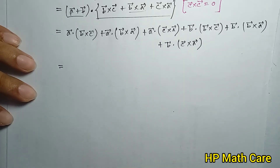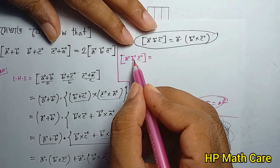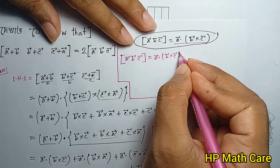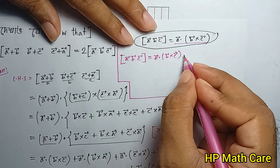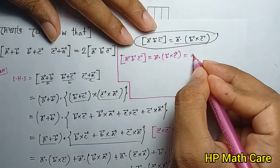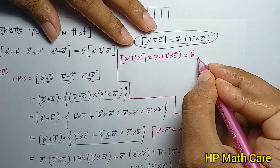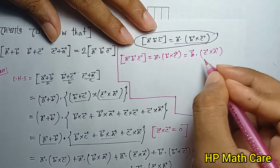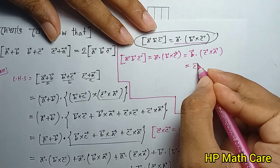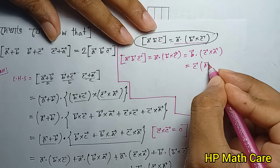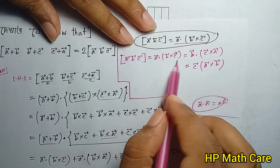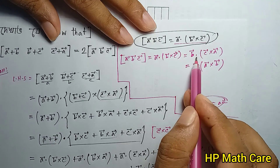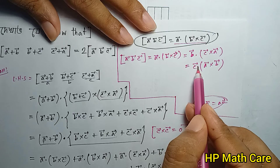A dot (b cross c) is the box product [a, b, c]. A dot (b cross a) equals zero because a repeated vector gives zero. A dot (c cross a) equals zero similarly. B dot (b cross a) equals zero, and b dot (b cross c) equals zero since b is repeated.